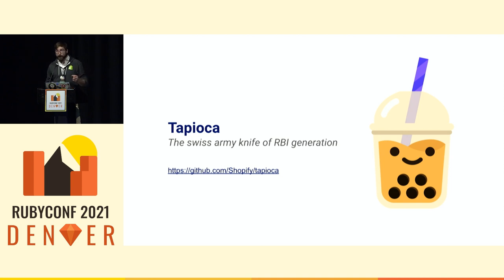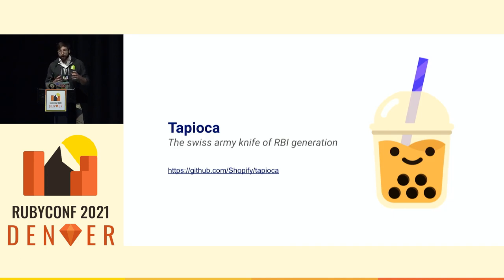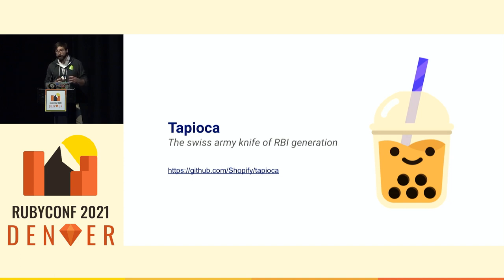Then there was the problem of gems being kind of black boxes. Sorbet does not open the gems you are linking in your application, so Sorbet doesn't know that a constant or method is coming from a given gem. So we had to find a solution, and we created Tapioca. In its first version, Tapioca was able to load the gems your application requires and create interface files for Sorbet to understand what is coming from those gems. If you have a dependency on gem A which declares a few constants and methods, Tapioca can find those and create RBI files that teach Sorbet that these things exist.